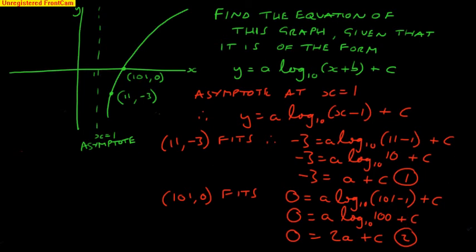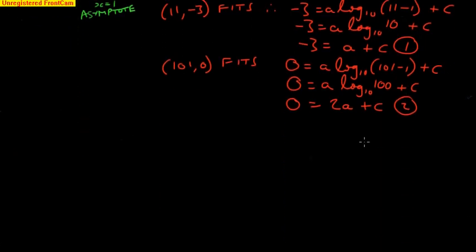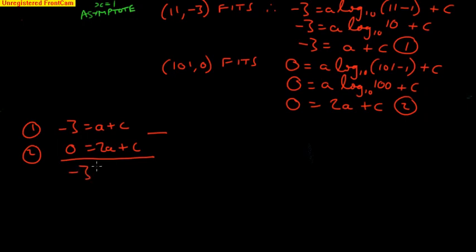I'm just going to go on and solve those simultaneous equations. I've got equation 1, negative 3 equals a plus c, and equation 2, 0 equals 2a plus c. I'll try and get rid of the c, so I'll just subtract equation 2 from equation 1. That would give me negative 3 minus 0, a minus 2a is negative a, and 0 equals 0. You can see that a equals 3.